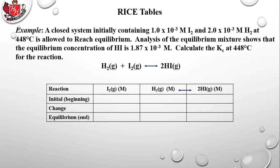Here's another example. We have a closed system containing 1×10⁻³ molar I2 and 2×10⁻³ molar H2, allowed to reach equilibrium at constant temperature. Analysis of the equilibrium mixture shows the equilibrium concentration of HI is 1.87×10⁻³ molar. Calculate Kc. This time you're given an equilibrium concentration for HI rather than an initial concentration, so it's like a puzzle filling in the boxes.